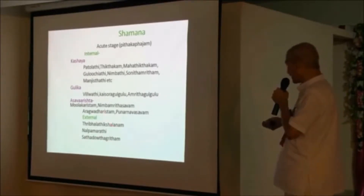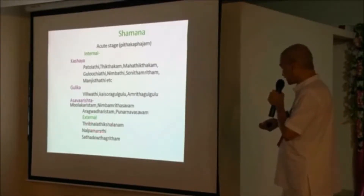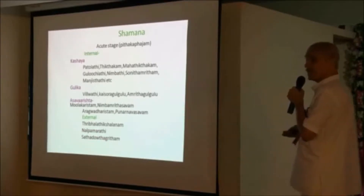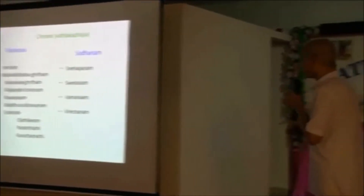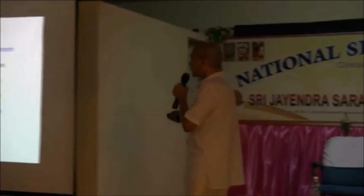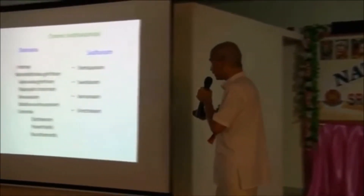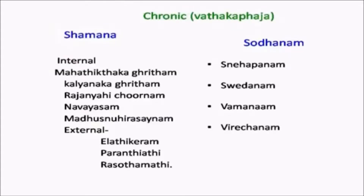You can give shalana with Tribuladhi kashaya, Nalpamradi, or application of Shadadogrida, depending on the condition. In the chronic state, for shamana you can give ghrita and application of oil. Also in chronic cases you can do shodhana: talapotichil, vittisna, avahana, shodhana, vamana, and virechana — everything depends upon the condition.